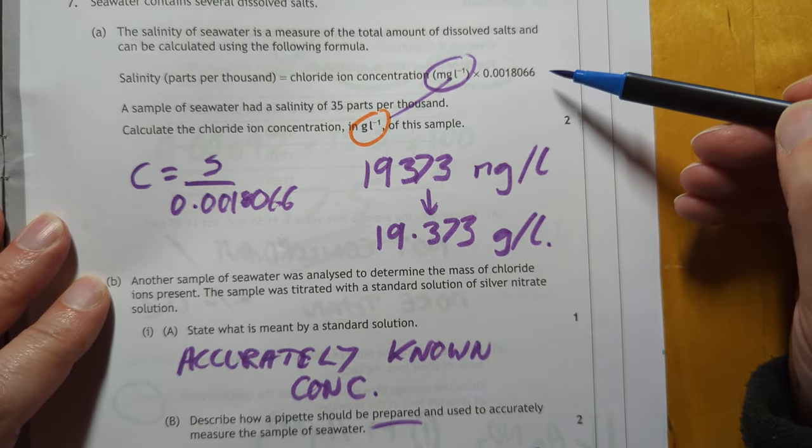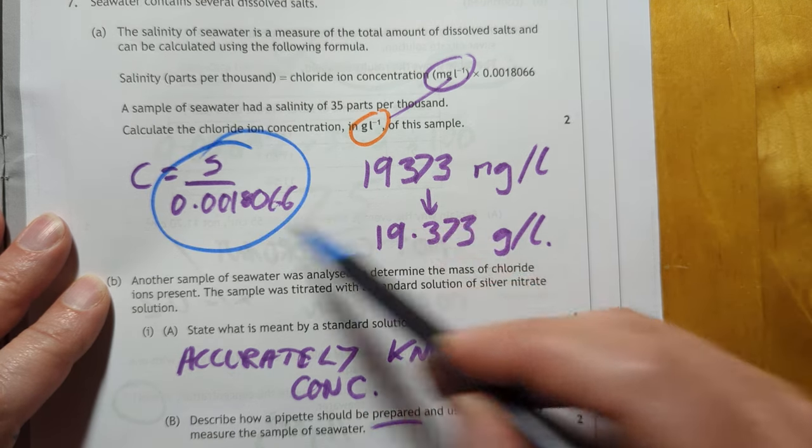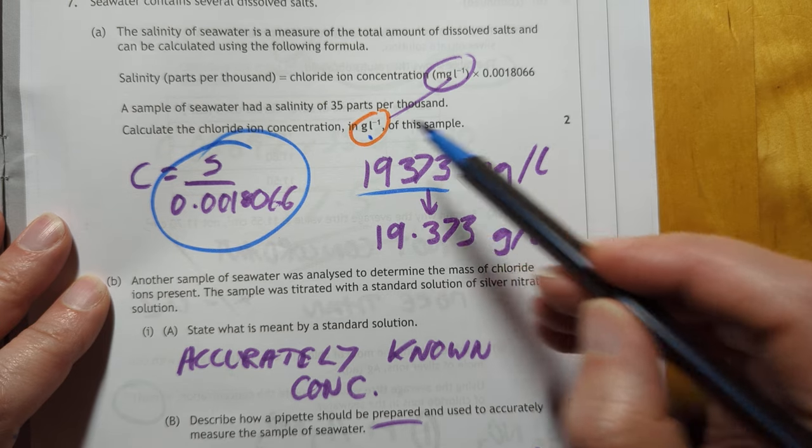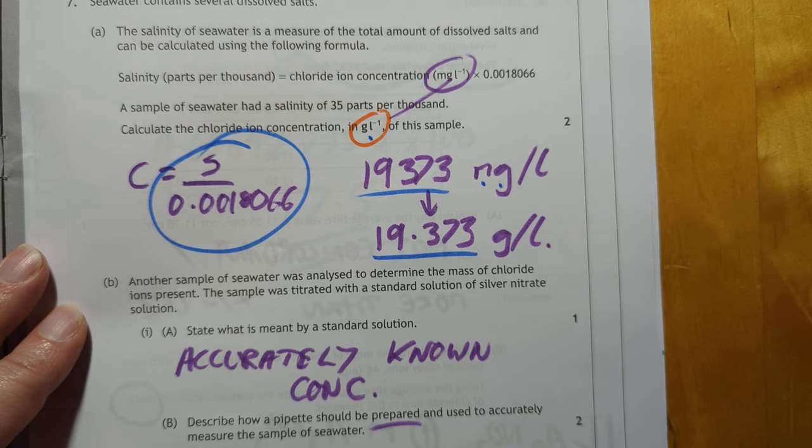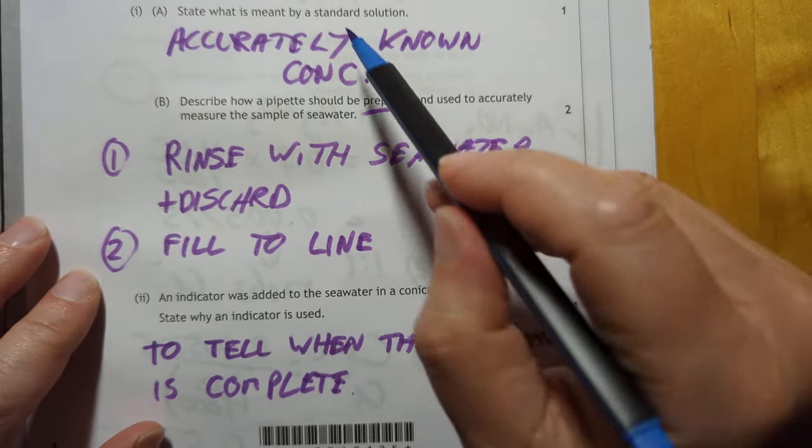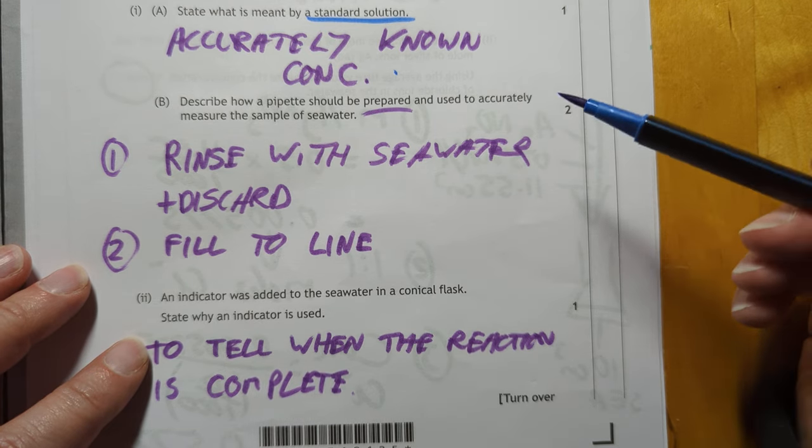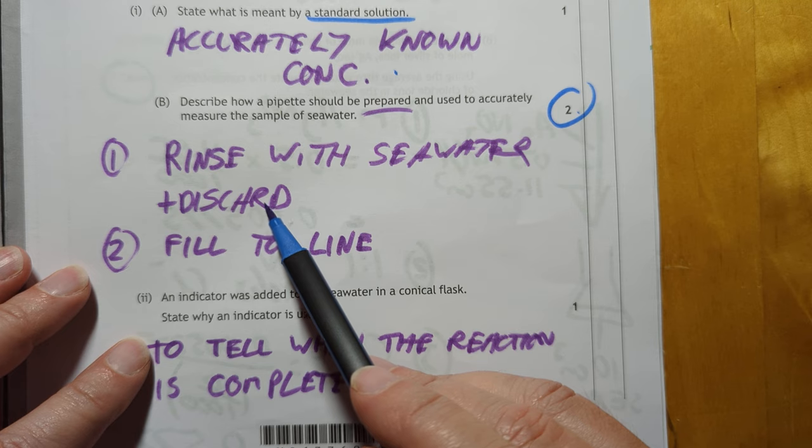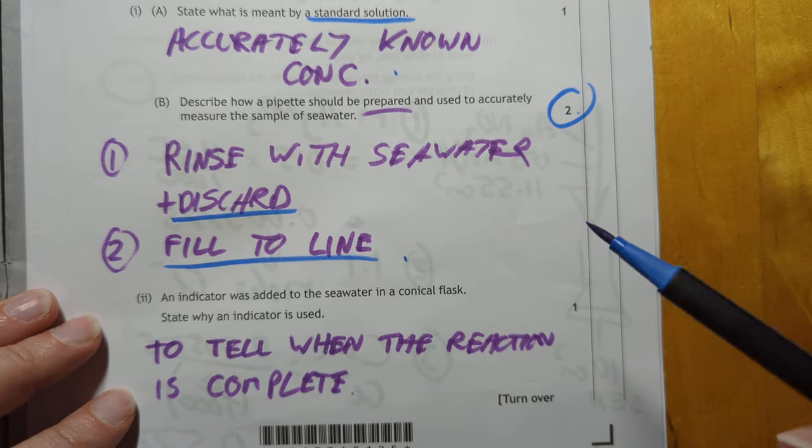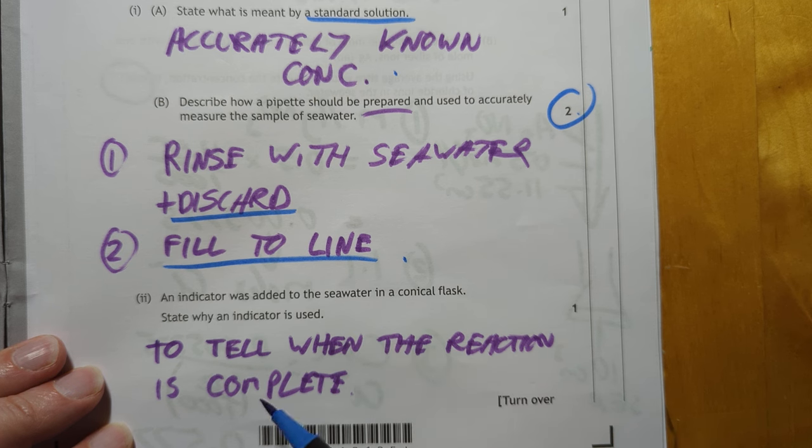Problem solving. Salinity. I came out to follow the formula you get that you get that that's milligrams per liter they want it in grams per liter so divide it by a thousand and you get that. Excuse me glass of water time. Standard solution accurately known concentration. I'm guessing for the two marks they want you to know that you rinse it with the seawater and then discard that and then refill it back up to the line. Why would you add an indicator to your titration? To tell you when the reaction is finished.